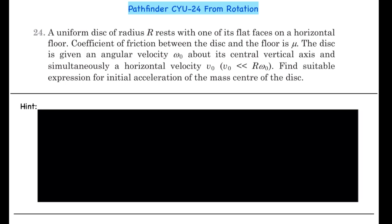A uniform disk of radius r rests with one of its flat faces on a horizontal floor. The coefficient of friction between the disk and the floor is mu. The disk is given an angular velocity omega-naught about its central vertical axis and simultaneously a horizontal velocity v-naught, where v-naught is very very less than r times omega-naught. Find a suitable expression for the initial acceleration of the mass center of the disk. If you want to give it a try, you should do it now.